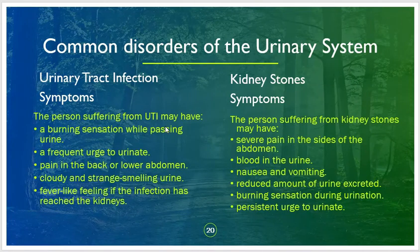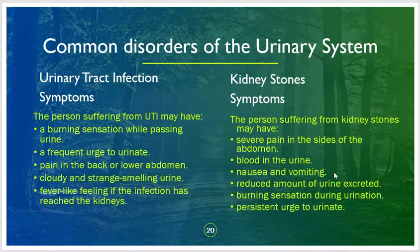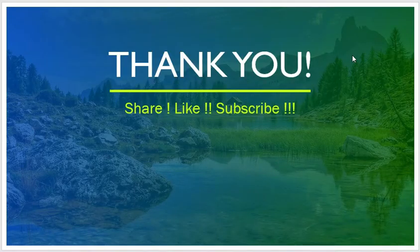Symptoms of UTI include a burning sensation while passing urine, frequent urge to urinate, pain in the back or lower abdomen, cloudy and strange-smelling urine, and fever if the infection has reached the kidneys. Symptoms of kidney stones include severe pain in the sides of the abdomen, blood in the urine, nausea and vomiting, reduced amount of urine excreted, burning sensation during urination, and persistent urge to urinate.